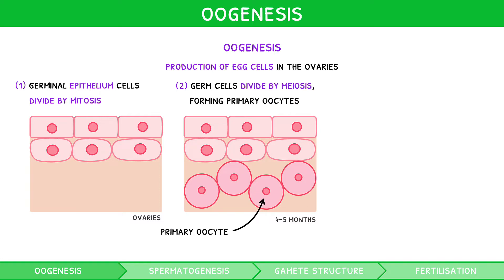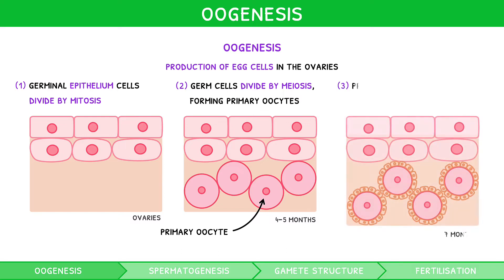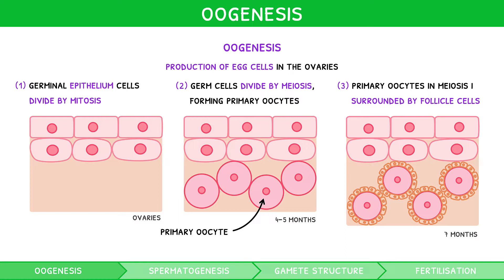By 7 months of age, primary oocytes are still within the first division of meiosis, but are now surrounded by a single layer of follicle cells. They are called primary follicles and remain unchanged until after puberty. Around 400,000 primary follicles are present in a fetus — a finite amount.